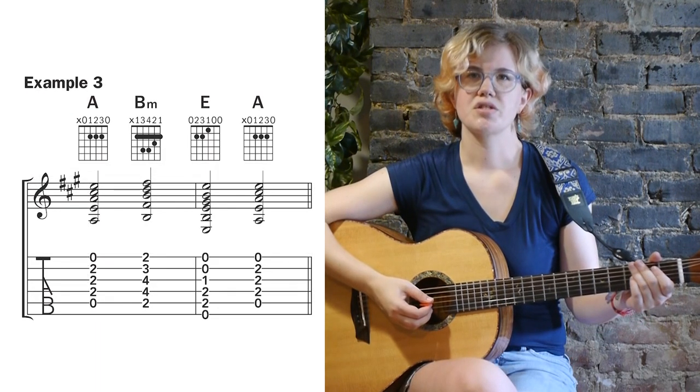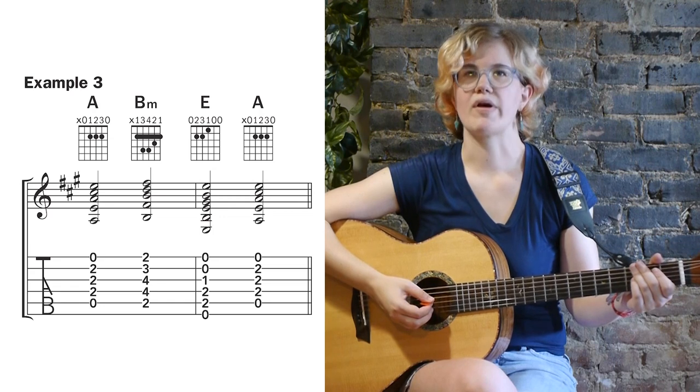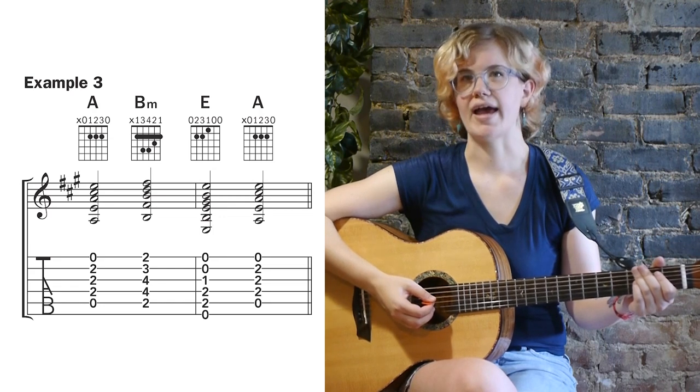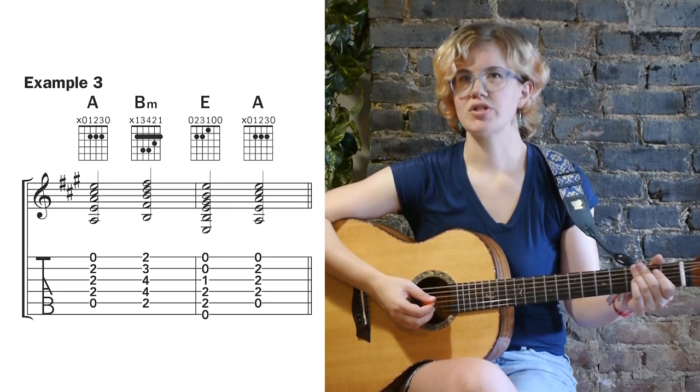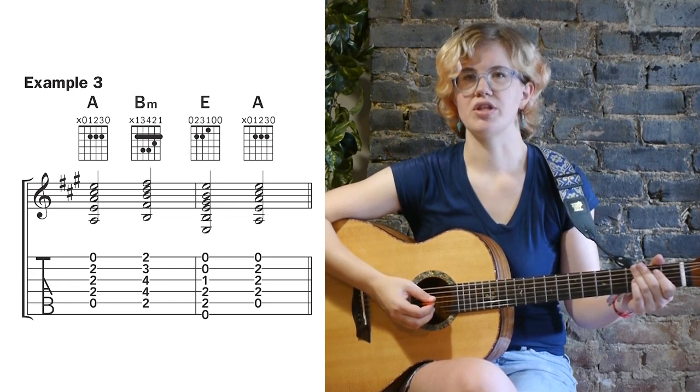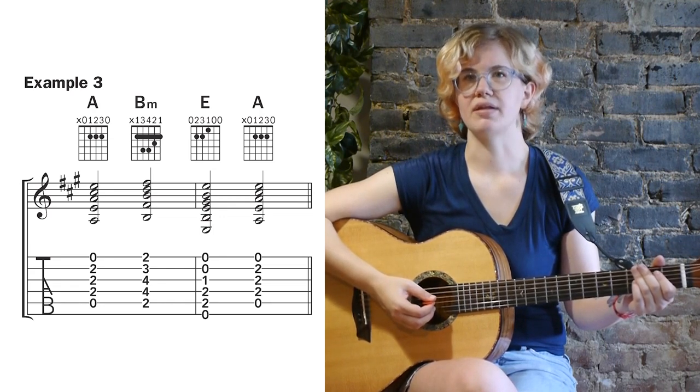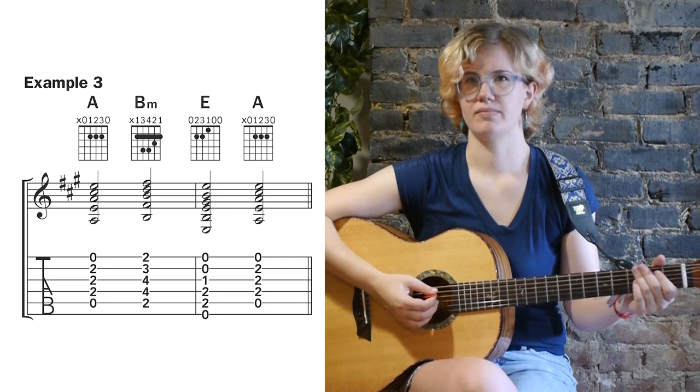Example 3 shows us the 1-2-5-1 progression in the key of A, using mostly open chords, with the only exception being the B minor in 2nd position.